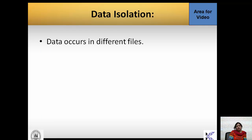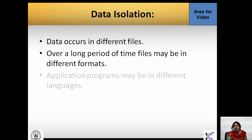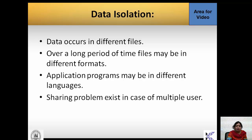The problem of data isolation occurs when storing data using different file versions — Microsoft 2003 on one machine, 2007 on another, 2012 on another. Data can occur in HTML format, Word format, or Excel format. Over a long period, files may be in different formats and application programs may be in different languages. There is no centralized data and no standard way to share it with multiple users.